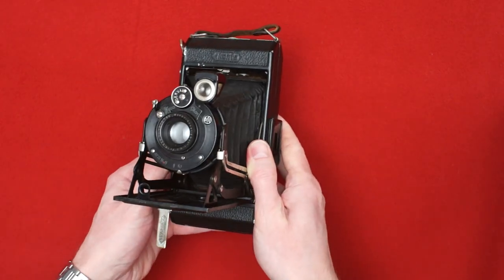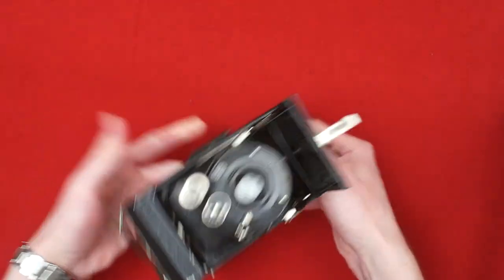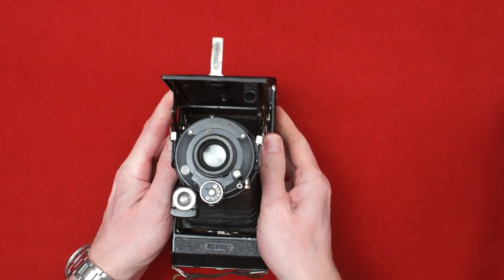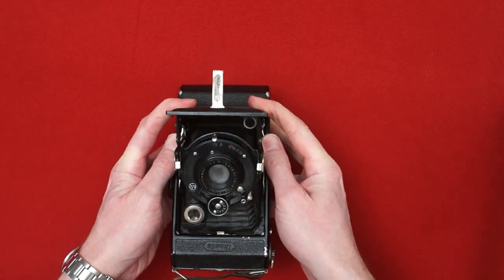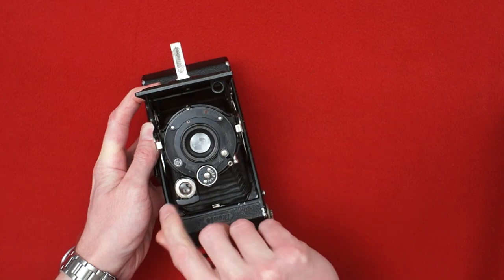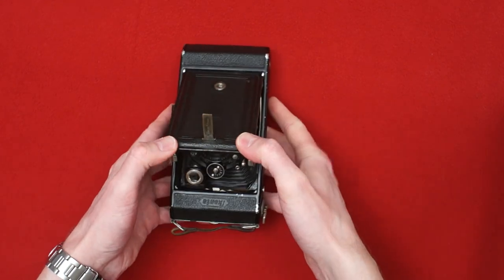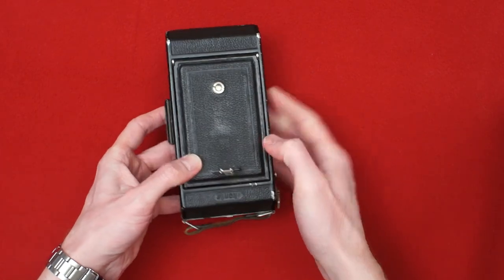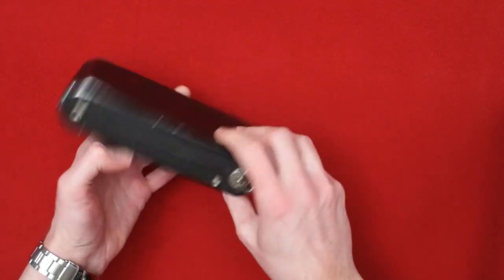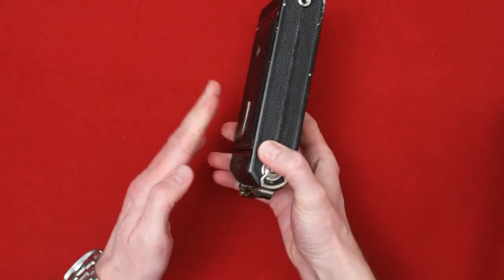To close the camera, simply push on these two struts here. You have to push on both sides. Brilliant window has to be in portrait position. Close the camera. And to open it again you just push on this button here.